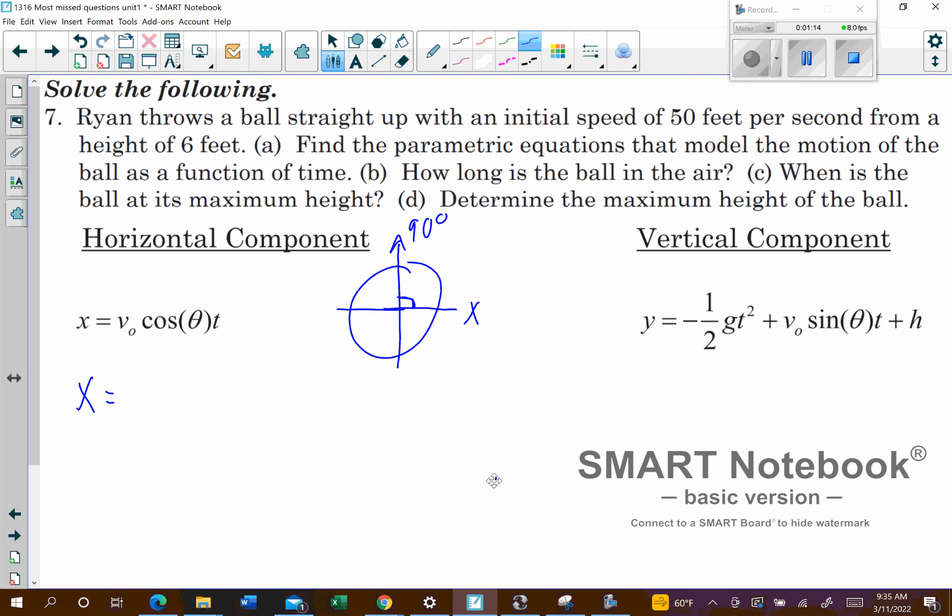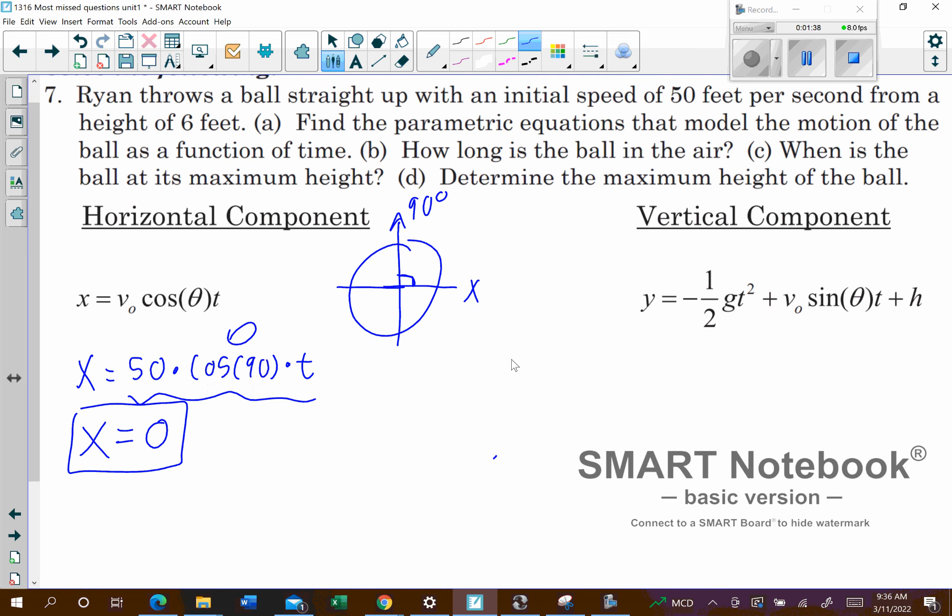Even though your v-naught is 50, we can plug that in, but we're going to multiply it by cosine of 90 and then times t. Cosine of 90 is zero, so that's going to zero everything out. So that one's just x equals zero. But looking at the vertical component, we have a little bit more going on here that we can work with.